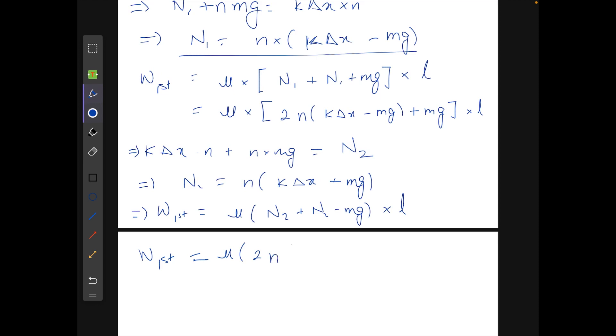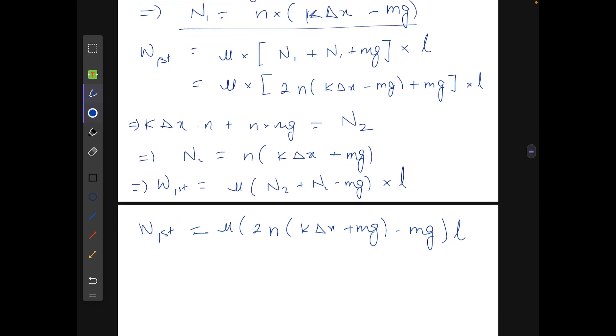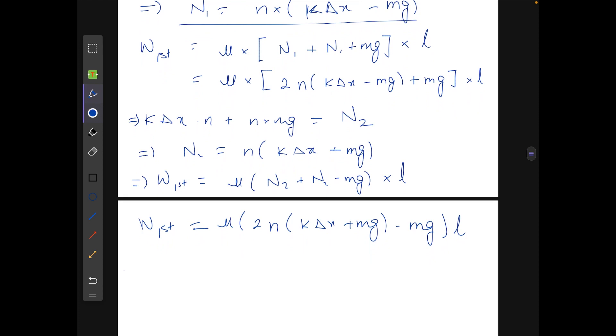So now the difference between these two for removal of just the first plate, delta w for the first plate in the two cases will be equal to mu times l times 2n times 2mg.